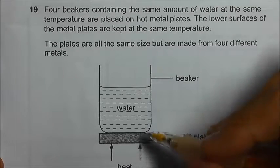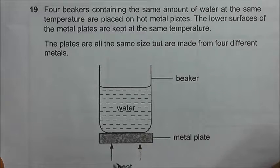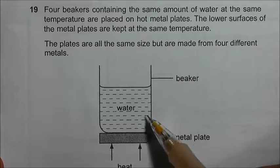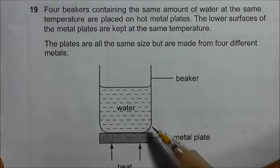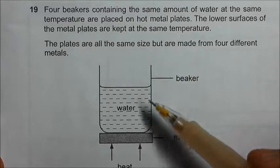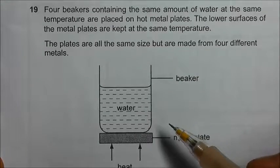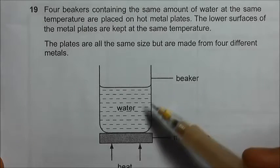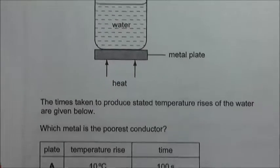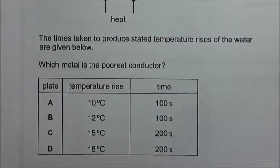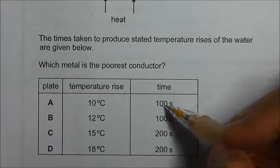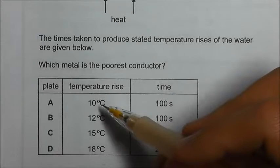Okay, in this question, the heat is placed at the bottom and then there's a piece of metal plate that is placed under the beaker. And the temperature of the water is being recorded over a period of time. And this temperature is being recorded for four different metal plates and the results are tabulated below. So now plate A, it takes 100 seconds to rise 10 degrees Celsius.